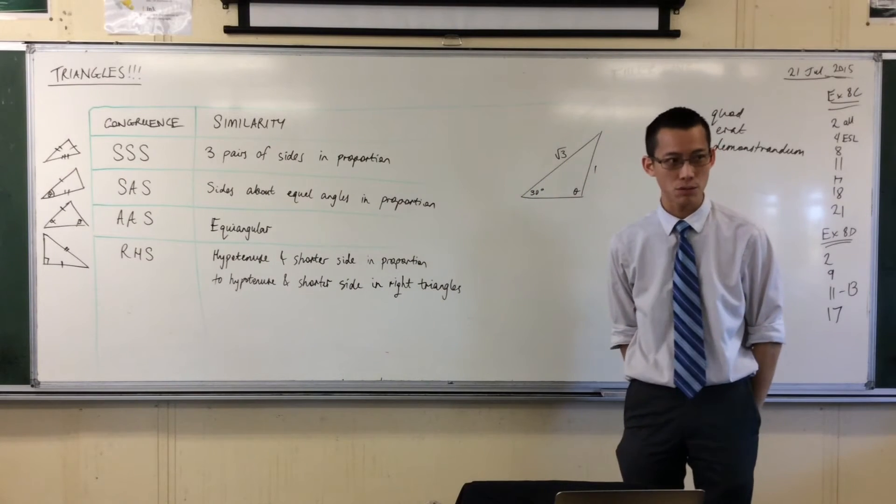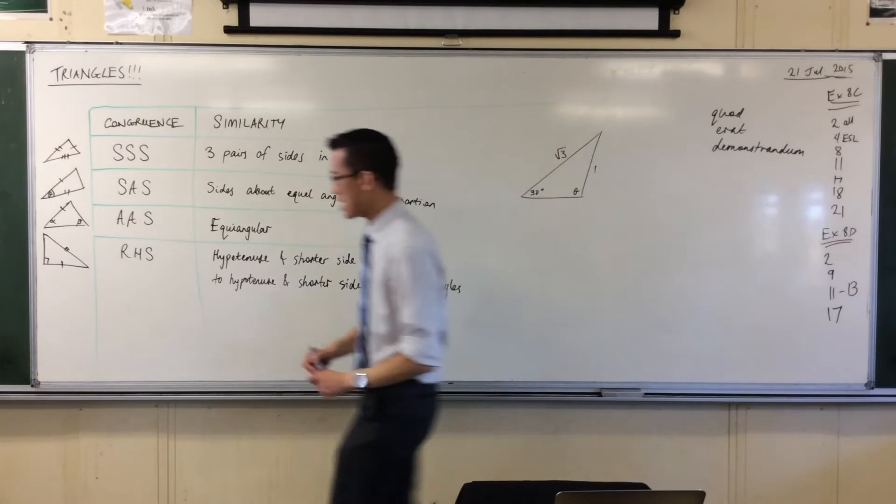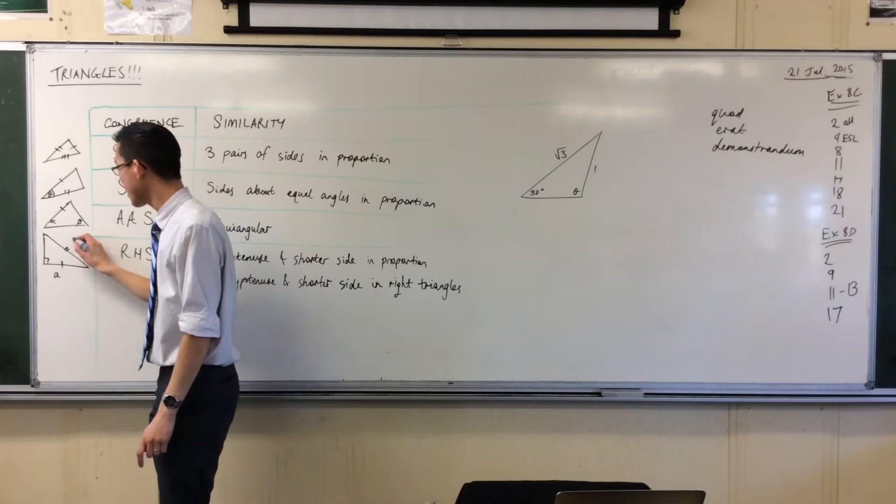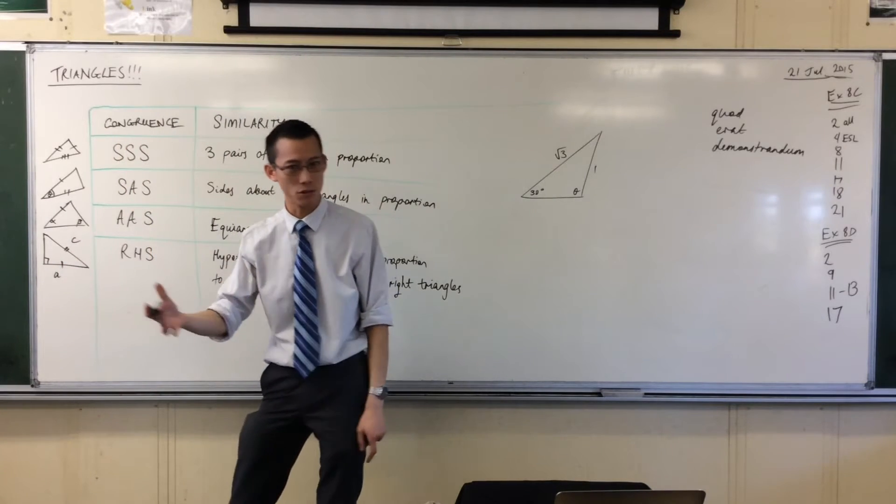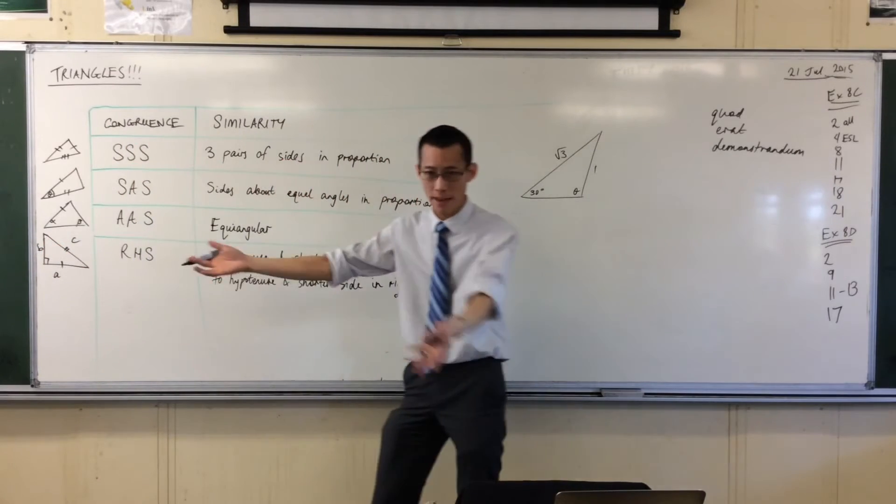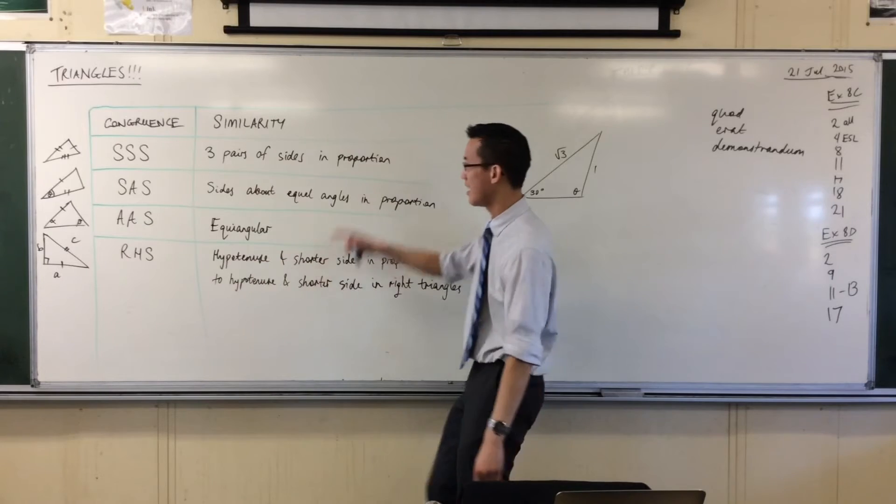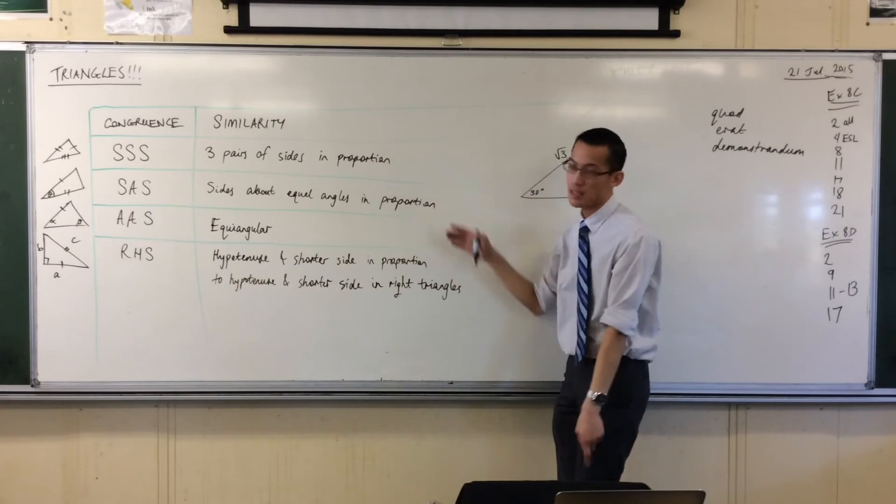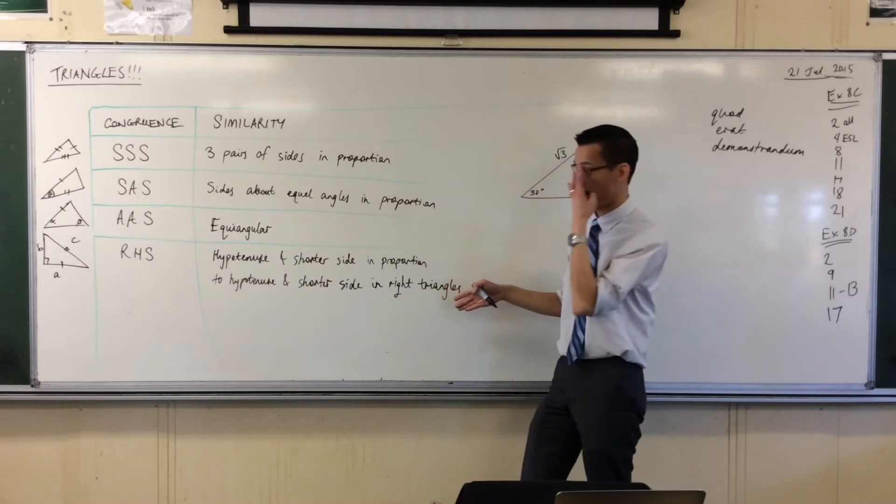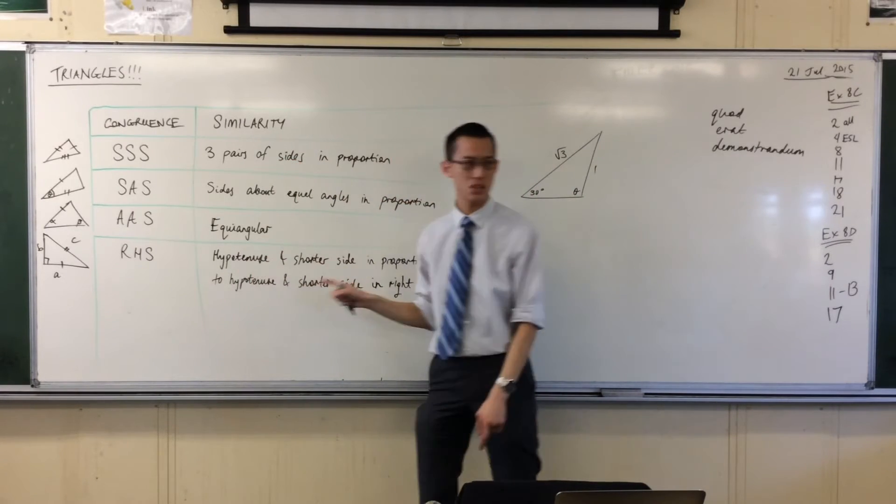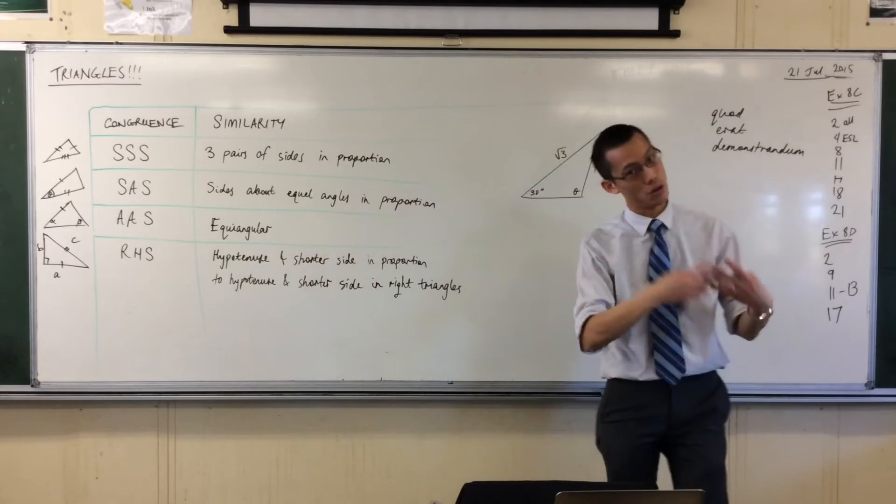Now hold on a second, being that this is a right-angled triangle, if you know, like we usually call the sides A, B, and C, if you know A and C, it is trivial to work out B. Like you can just do Pythagoras, then you've got all three sides, and then you just say this, rather than this mouthful. So it's there, the reason why it works is because it implies this one. Once you have the hypotenuse and shorter side of a right-angled triangle, you have all the sides.